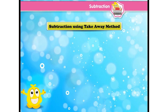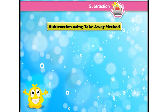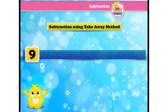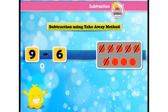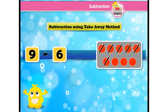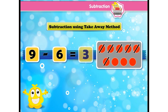Let's do subtraction using the take-away method. Solve 9 minus 6. First, draw 9 circles. Now, cross 6 circles. Then count the rest — it is the difference. 1, 2, 3. So, 9 minus 6 is 3.